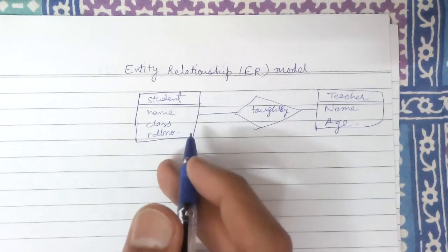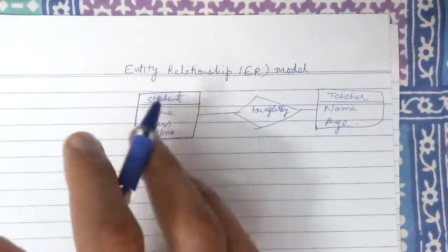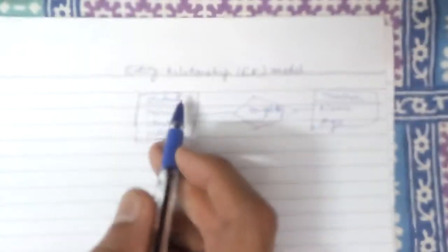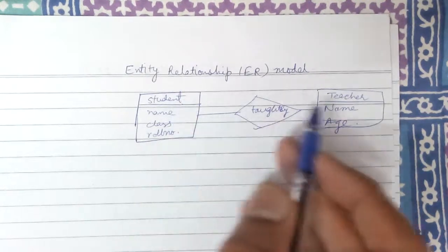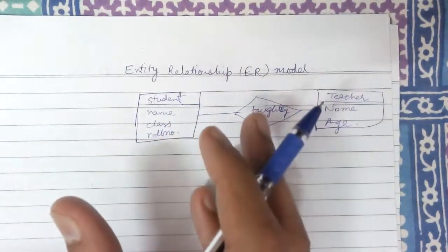So basically an entity is an object in a real world which can be a student, a teacher, anything which is an entity, a real world object.